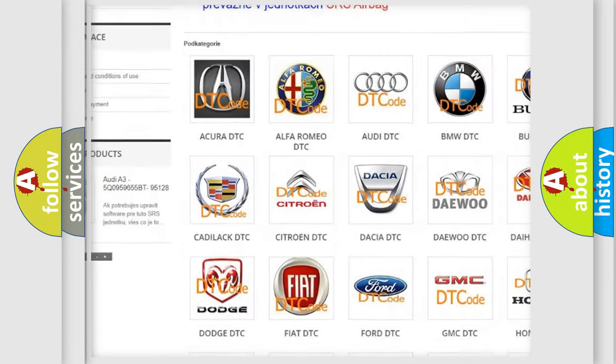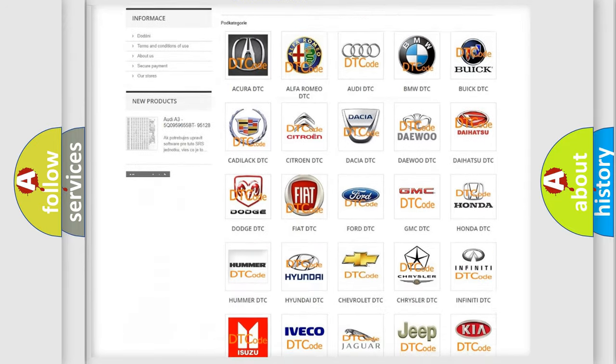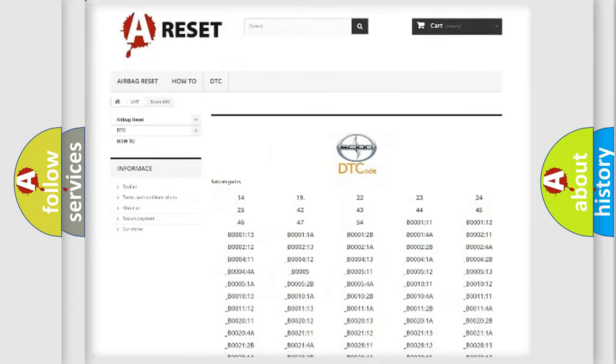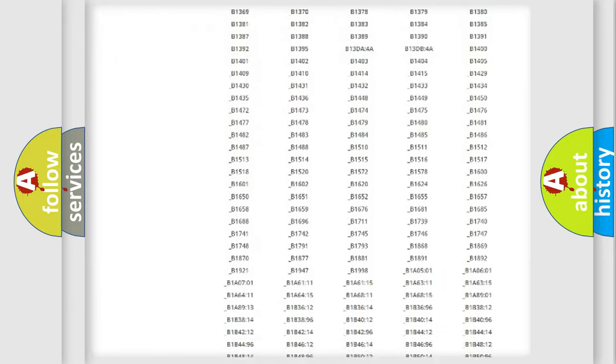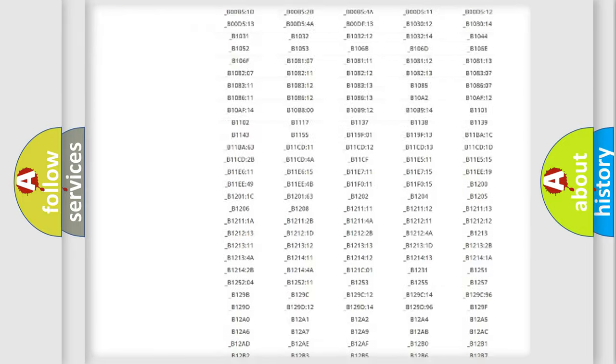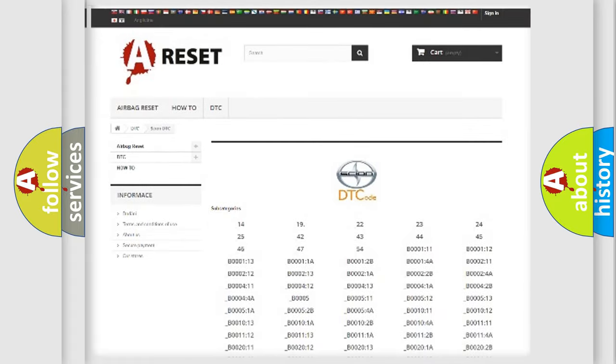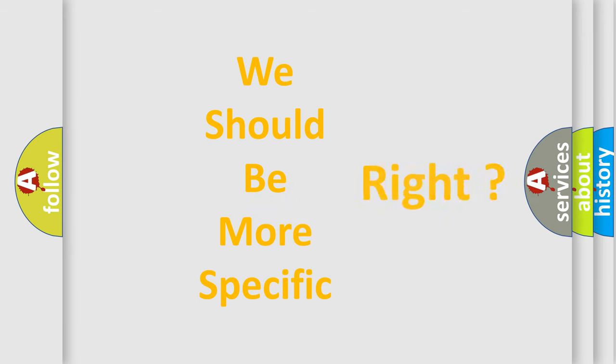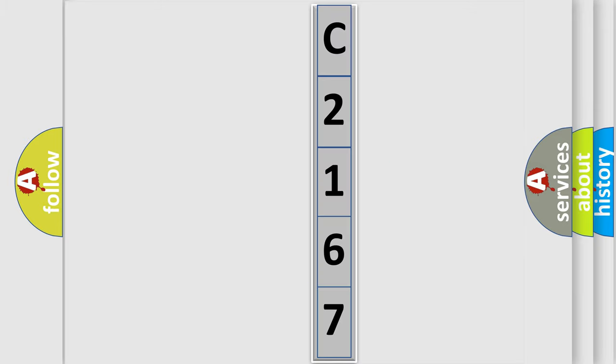Our website airbagreset.sk produces useful videos for you. You do not have to go through the OBD2 protocol anymore to know how to troubleshoot any car breakdown. You will find all the diagnostic codes that can be diagnosed in Scion vehicles, and many other useful things. The following demonstration will help you look into the world of software for car control units.